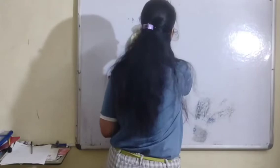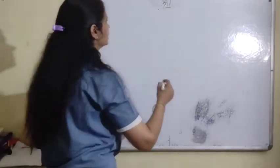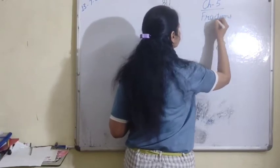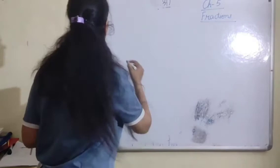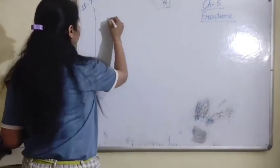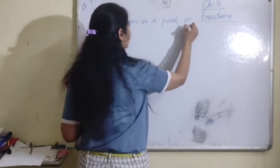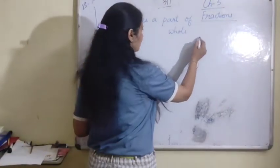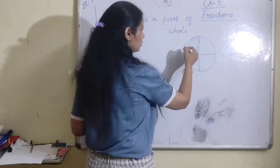What is a fraction? A fraction is a part of a whole. Whole ka part hota hai. That's why a fraction is always smaller than the whole. For example, if I divide something into 4 equal parts and 1 is shaded, the shaded part is 1 by 4. So, a fraction is a part of a whole.